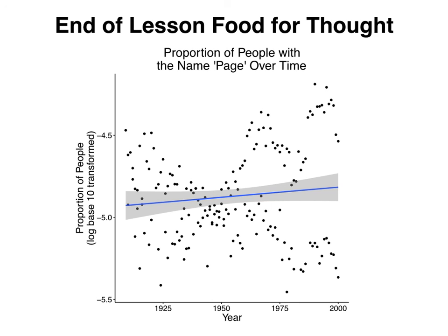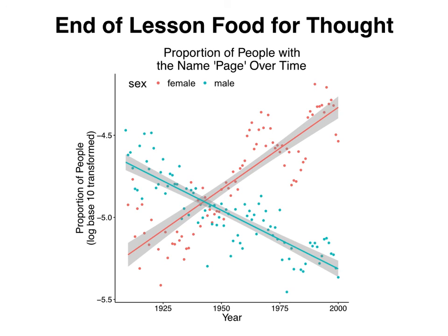But we actually have two variables in this data set, year and sex. So let's see what happens when we color our data points by sex. Now it's starting to seem like we have clear groupings of data points that vary over time. Here, the salmon color is for females and the turquoise for males. So what would happen if we did two separate linear regressions, one for each sex over time?